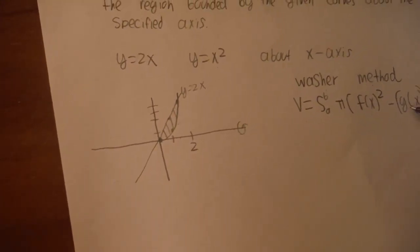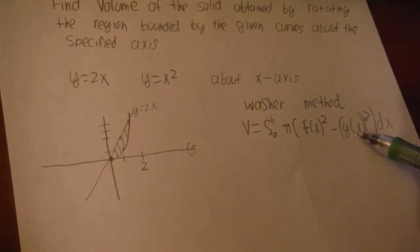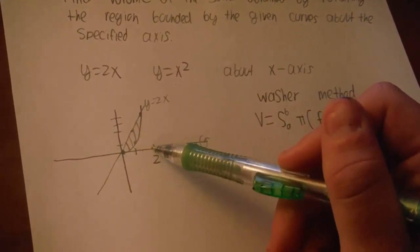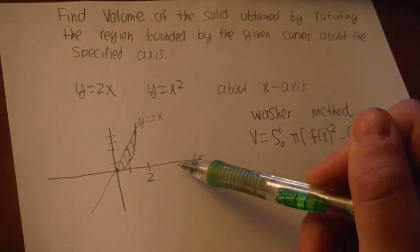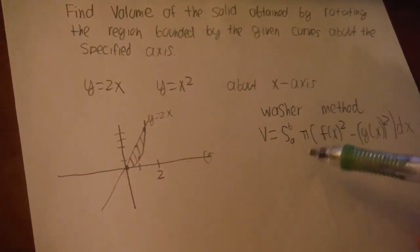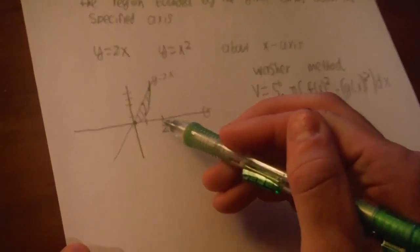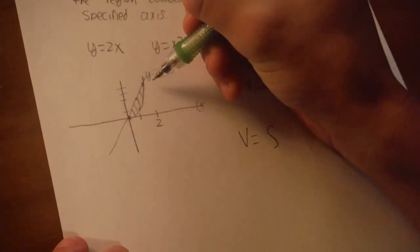f of x is the outside function, which in this case will be 2x because it is from the x-axis. The inside function is g of x, in this case will be x squared, because x squared is closer to the x-axis.